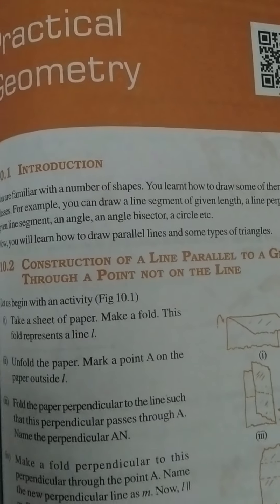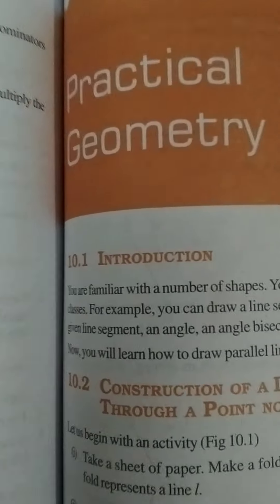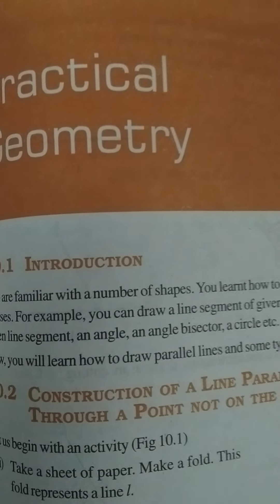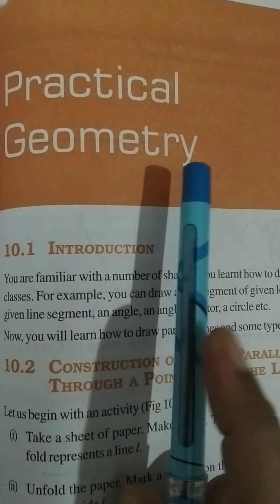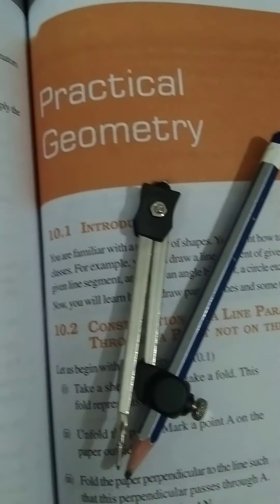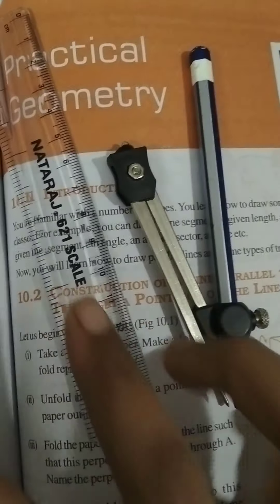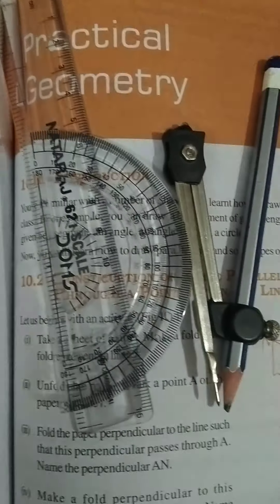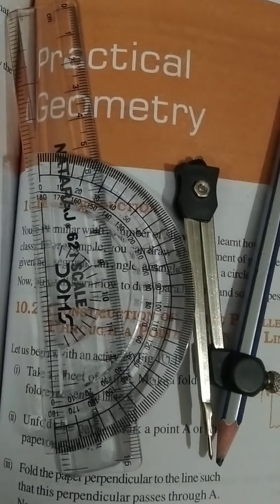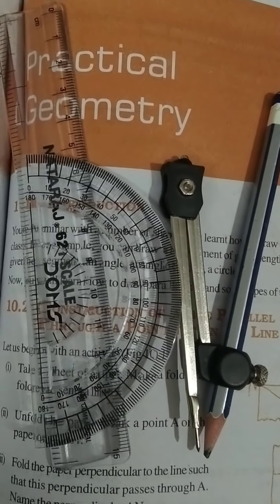Good morning class 7. Today I will start your new chapter: Practical Geometry, chapter number 10. For this chapter you will need a compass, pencil, scale, and protractor. Arrange these things first, after which we will start exercise 10.1.